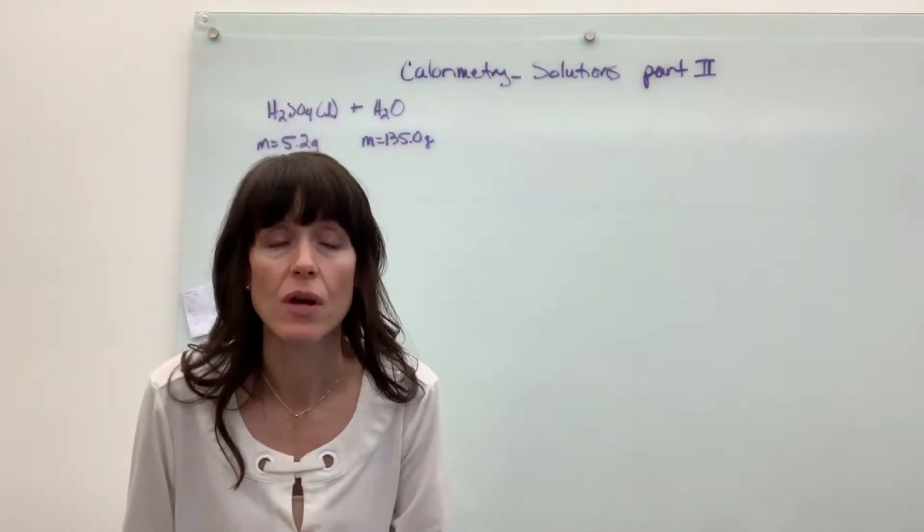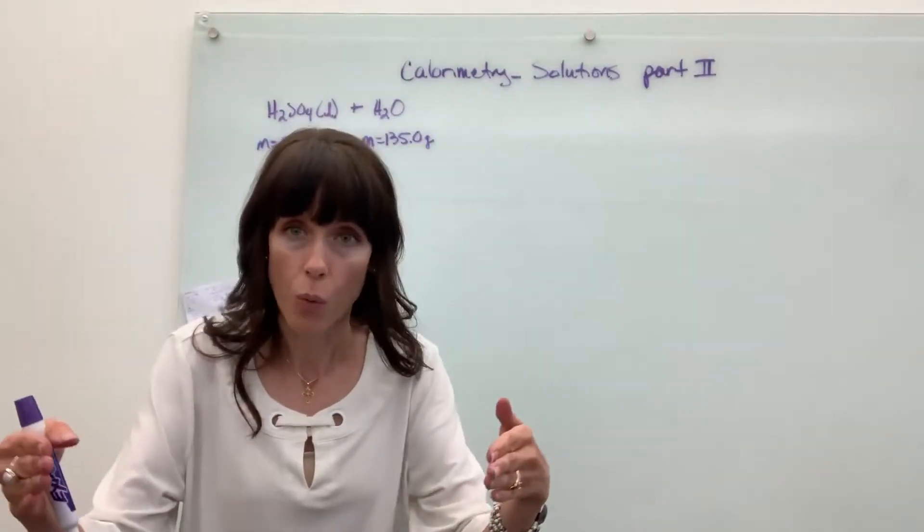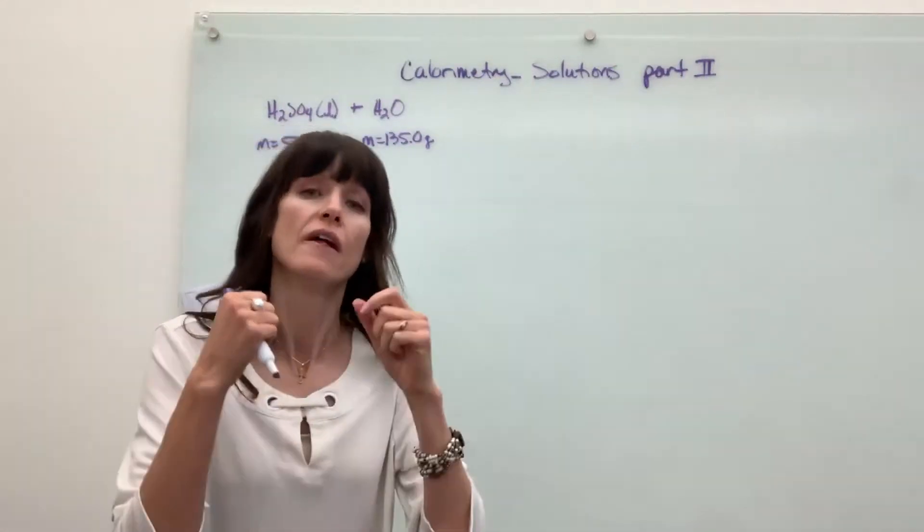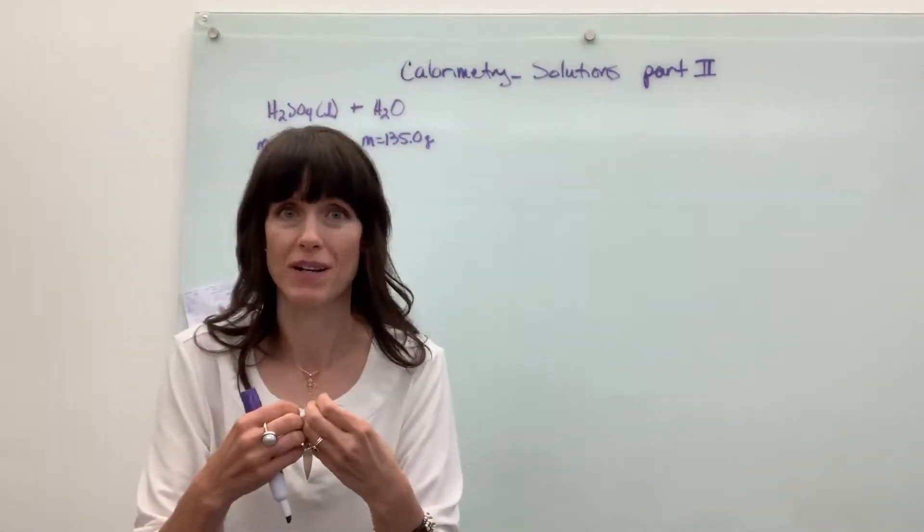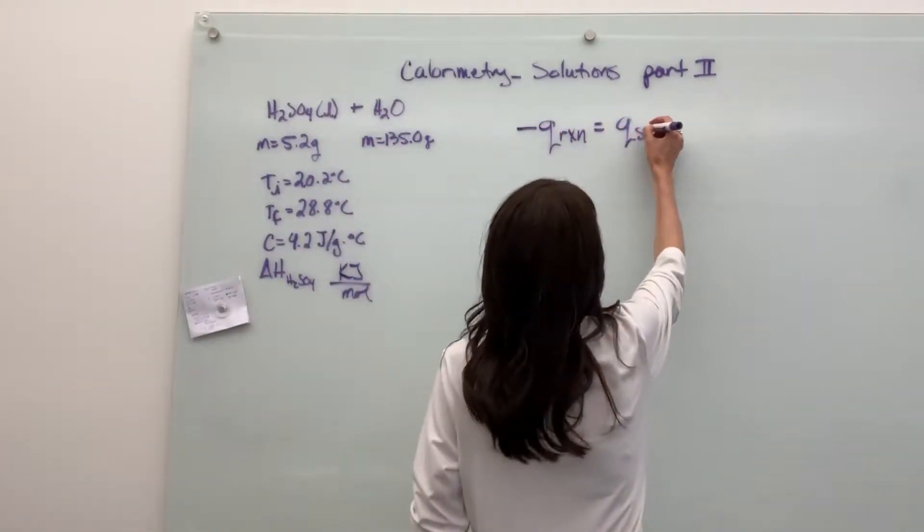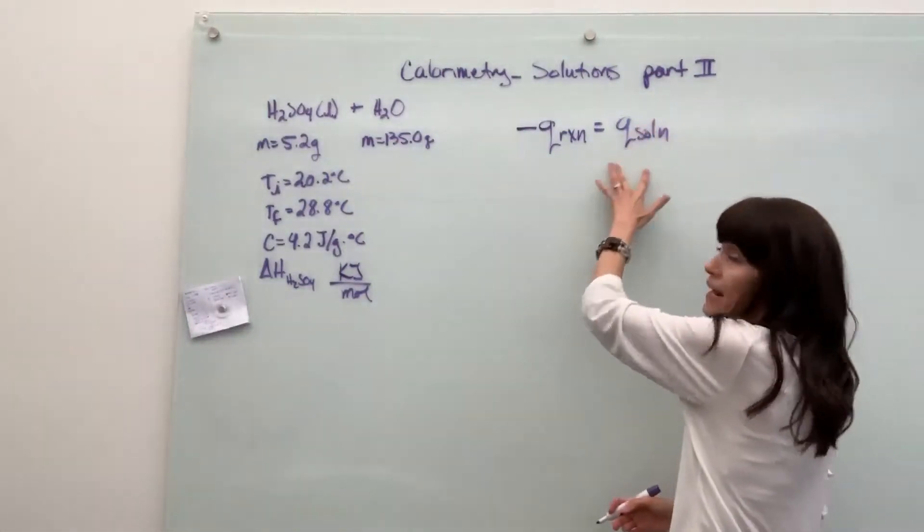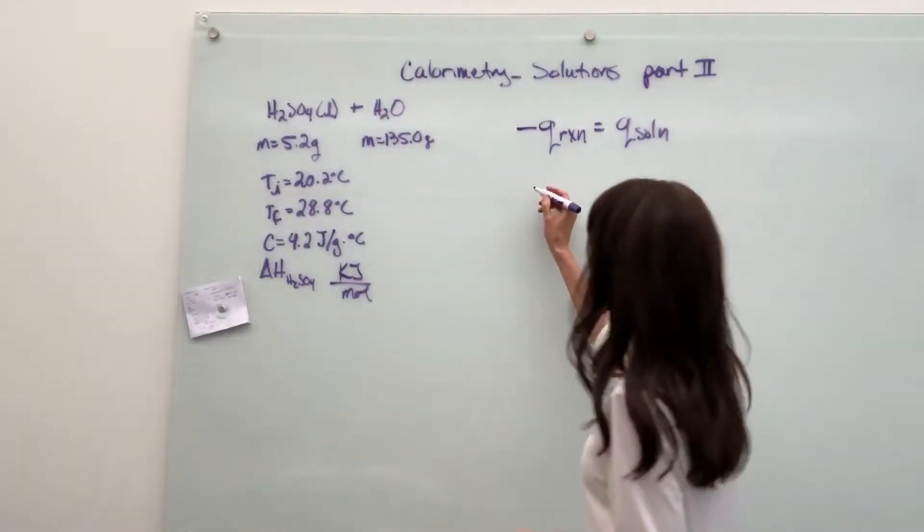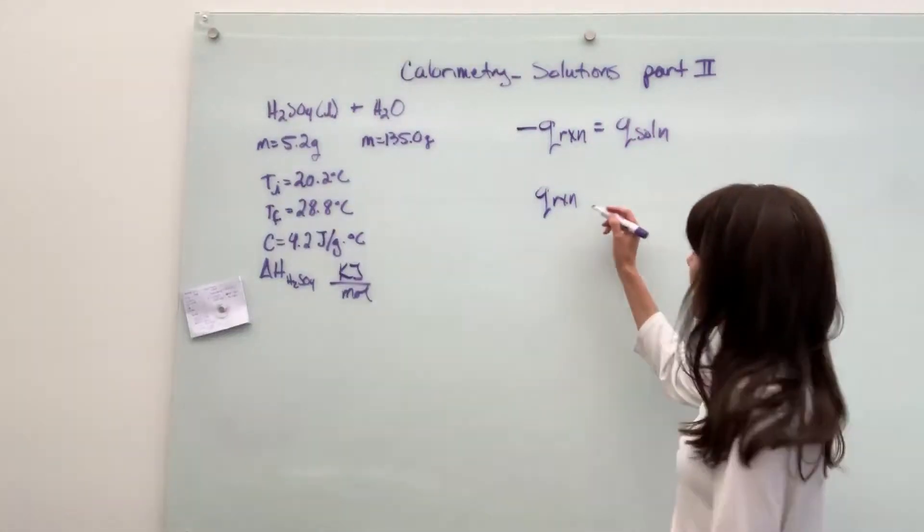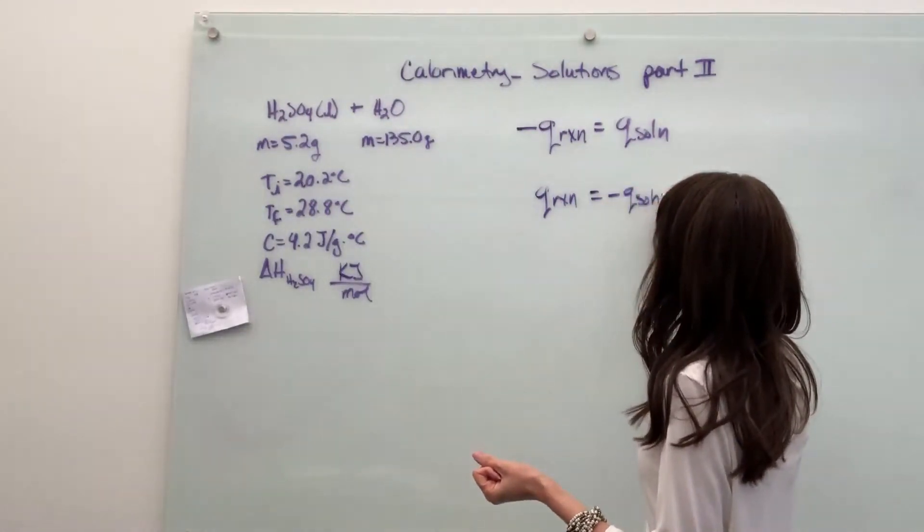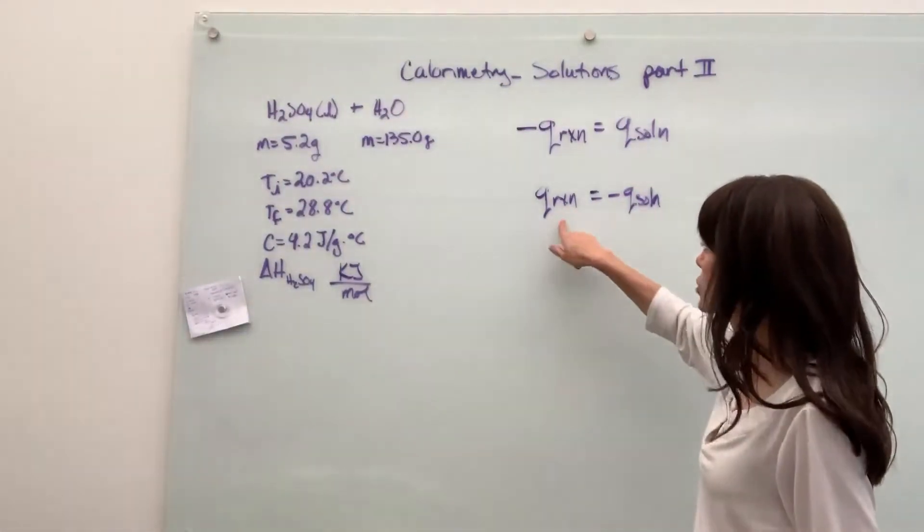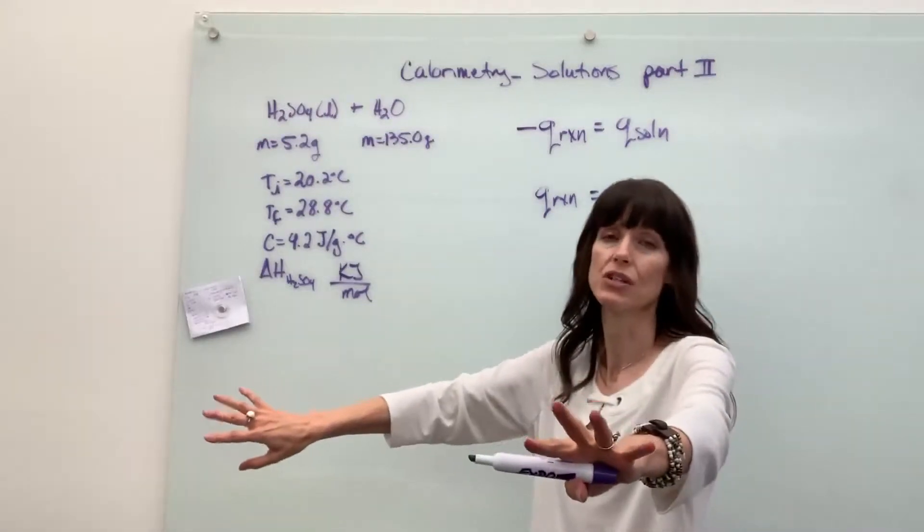Now if the temperature had gone down, that means that the solution would have lost energy. It would have given away energy into the reaction. So then the solution would have been exothermic and the reaction absorbed the energy from the solution. That would be the endothermic part of it. If the temperature goes down, that means the reaction is endothermic and the solution is giving away its energy, it's exothermic.